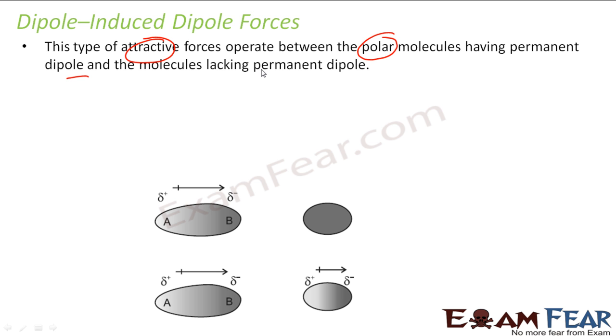One will have permanent dipole, for example in this case, the other will not have dipole. But since this guy has a negative charge, this will induce a dipole here.